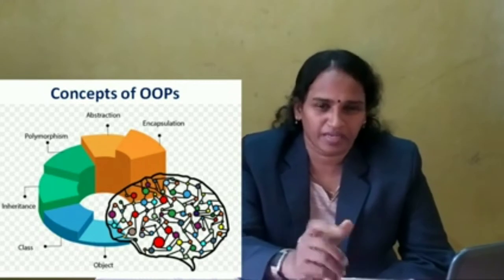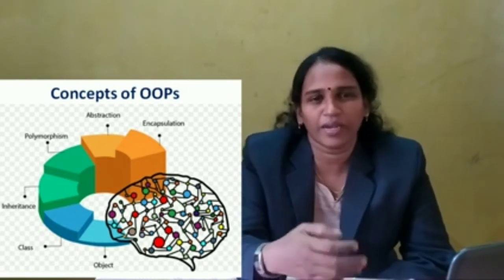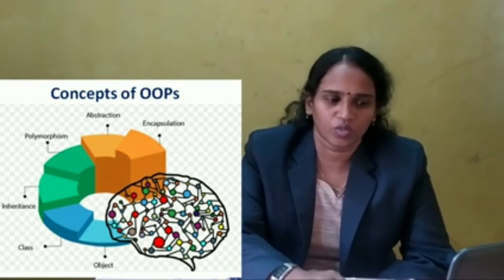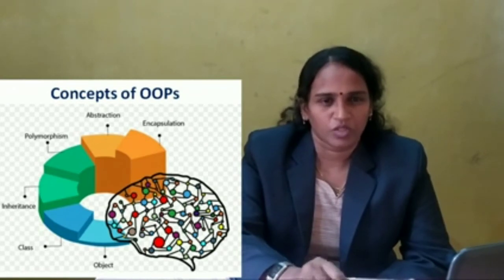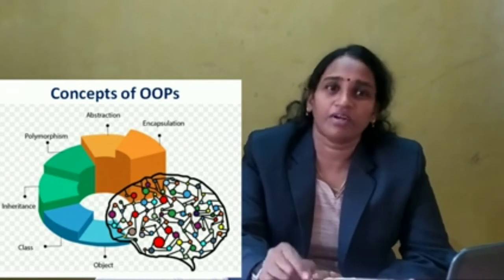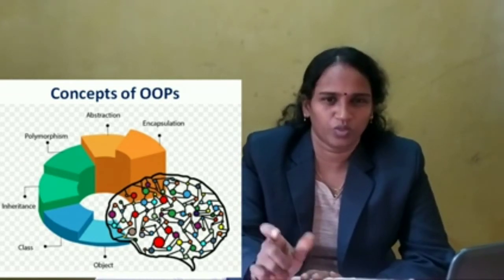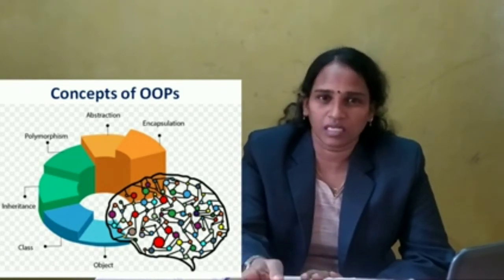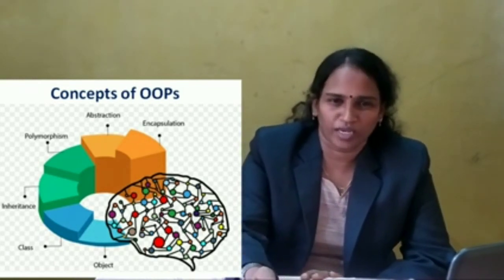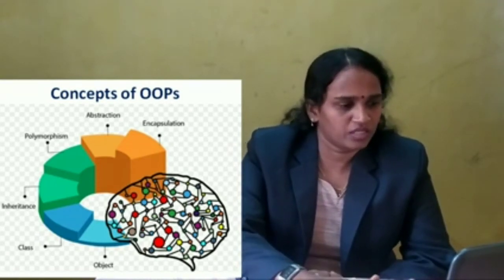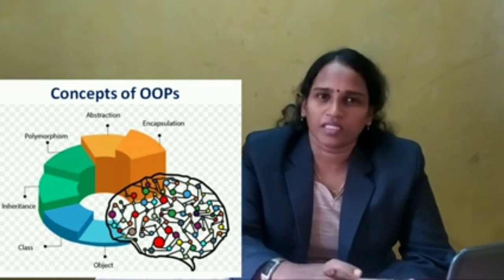Polymorphism means many things — we can derive many things from the same concept. For circle, we can derive circle one, circle two, circle three, and they all share the same radius concept. So we can derive more than one circle from the same class.